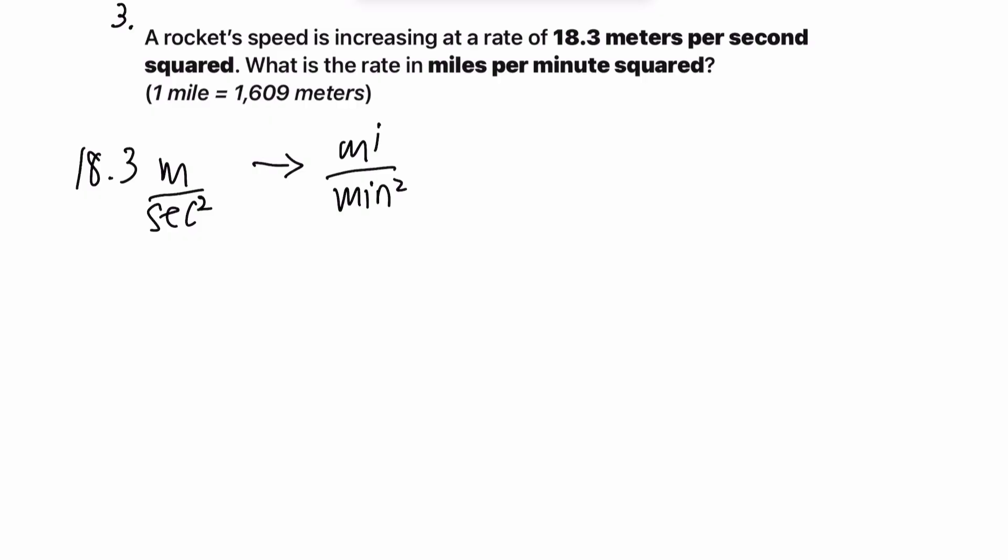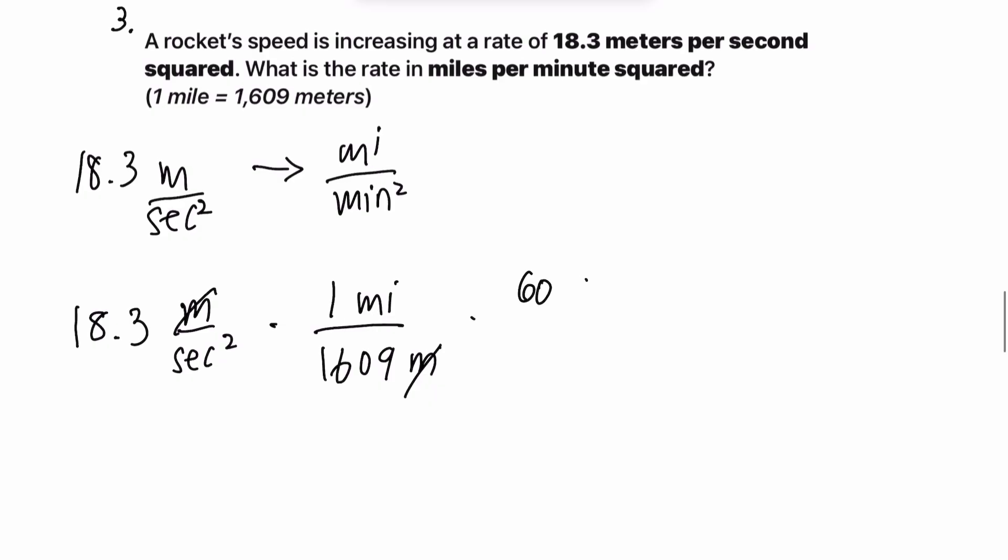How do we convert from here to here? Let's start with meters to miles. Wow, so it sounds like the more simple one. Second squared times one mile over 16.09 meters. The meters cancel out. And then we also want to convert from second squared to minute squared. So since there is 60 seconds in a minute, we're going to do that twice because we need minutes squared.